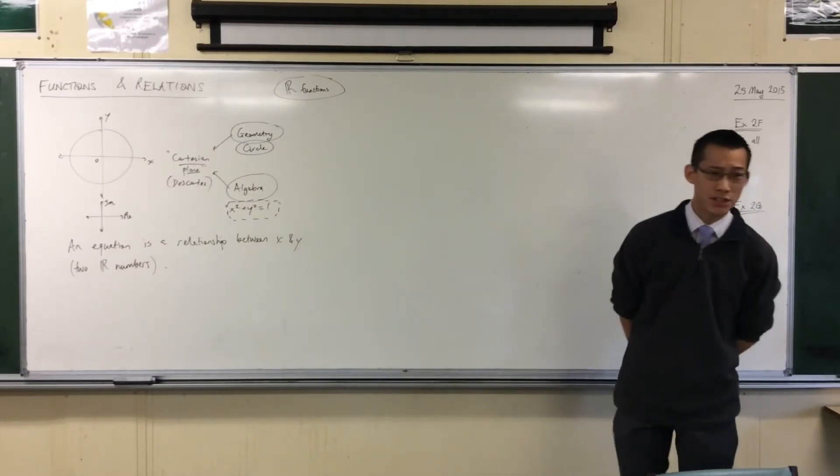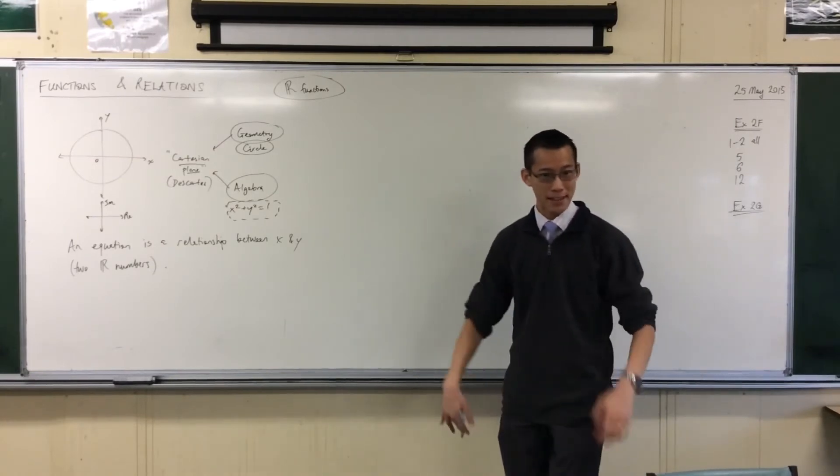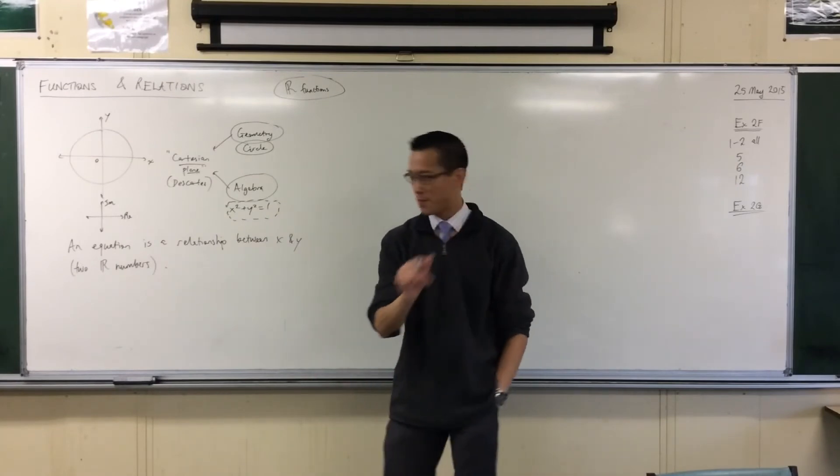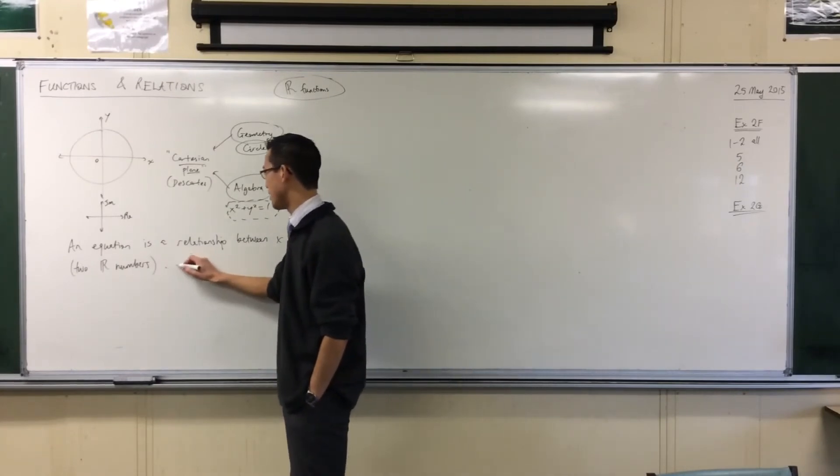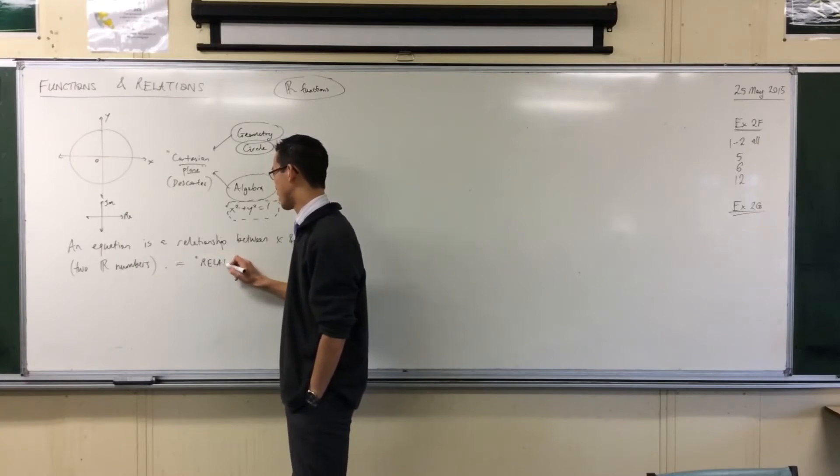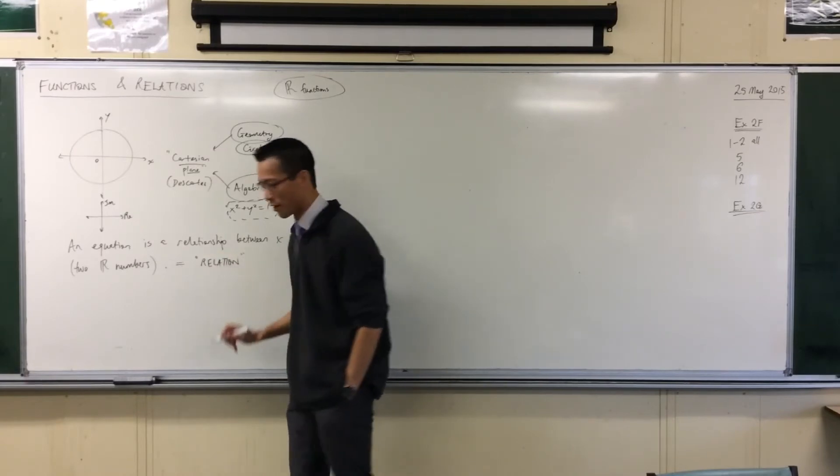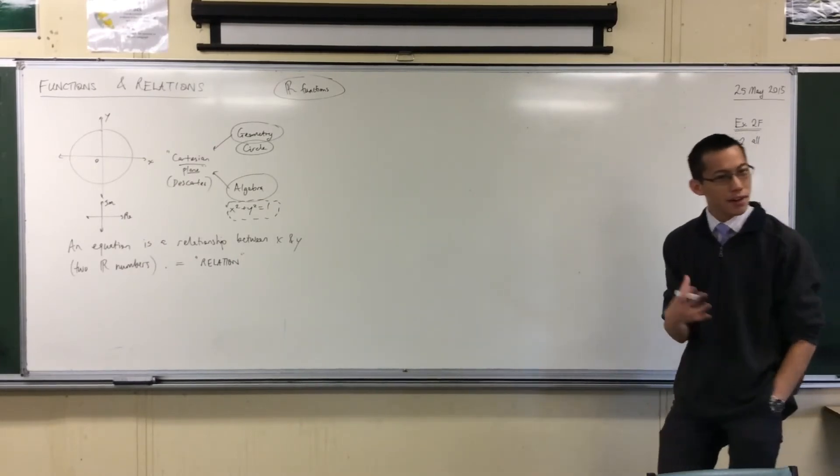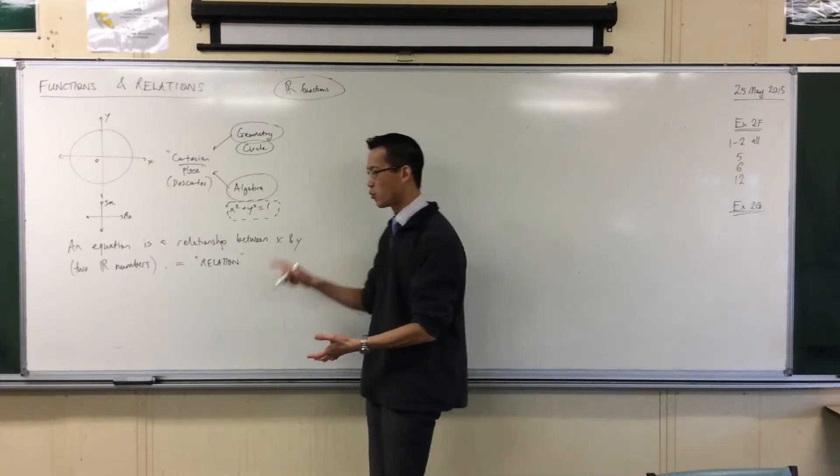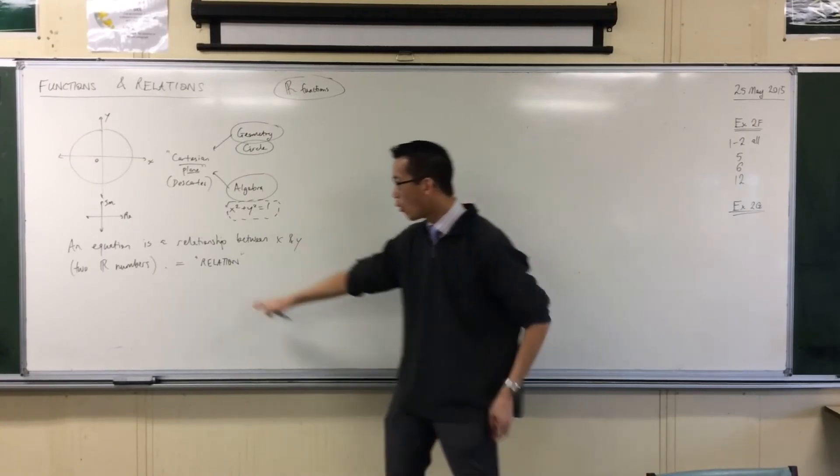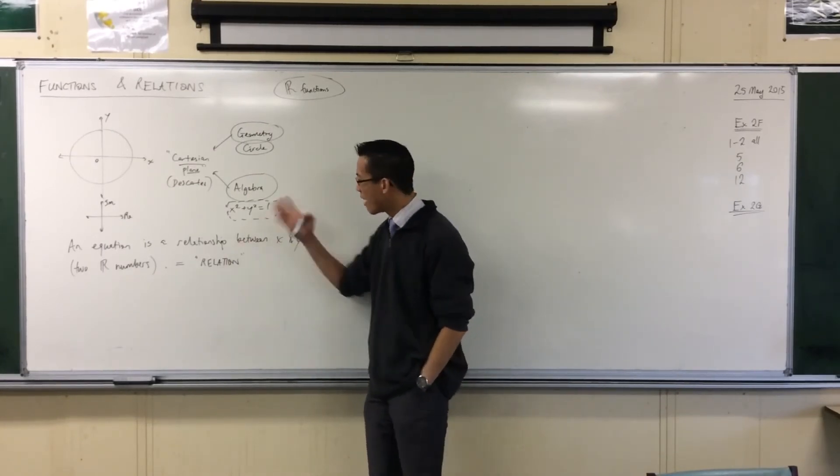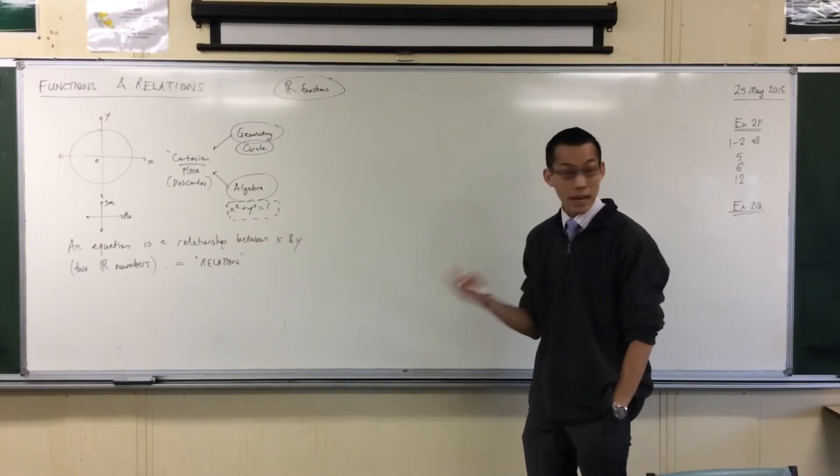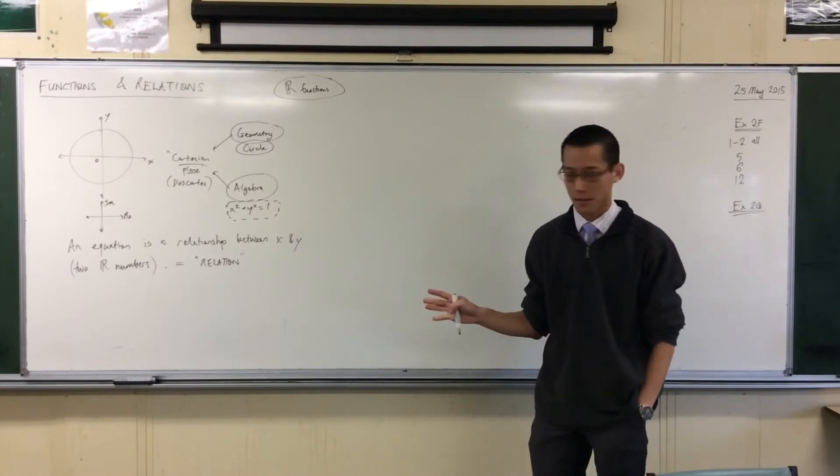Now, you guys know mathematicians are always inventing language and symbols to try and make things shorter. So rather than saying an equation is a relationship, they make it all that much shorter by saying, we call this a relation. So it's gone the other way from modern language. Mathematicians went the other way, and they said, this relationship between x and y, this pairing of these two kinds of numbers, we'll call that a relation. So any time you see x's and y's together in an equation, you get a relation between them. That's all it is.